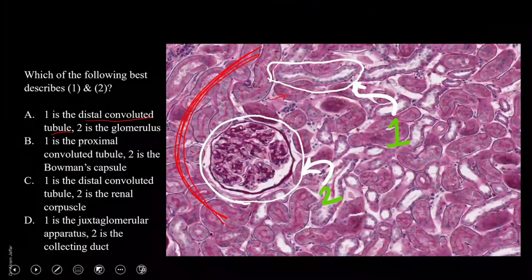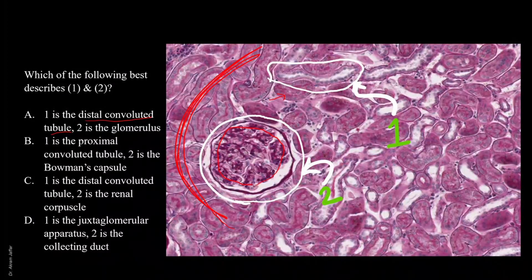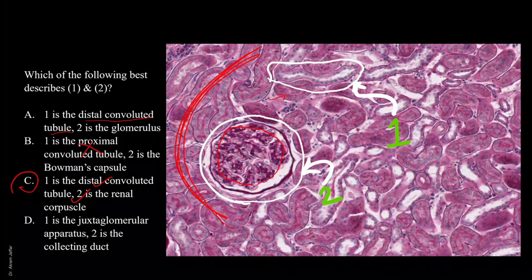Two is the glomerulus — but the glomerulus is only confined to this area. One is a proximal convoluted tubule? No, it is distal. One is a distal convoluted tubule, and two is the renal corpuscle. The renal corpuscle is the Bowman's capsule plus the glomerulus — this is a better description of two. So I would go with C. One is the juxtaglomerular apparatus? No, the juxtaglomerular apparatus doesn't look like that and is closely related to the Bowman's capsule because part of the apparatus is an afferent arteriole going into the glomerulus. Definitely not D. The correct answer is C.